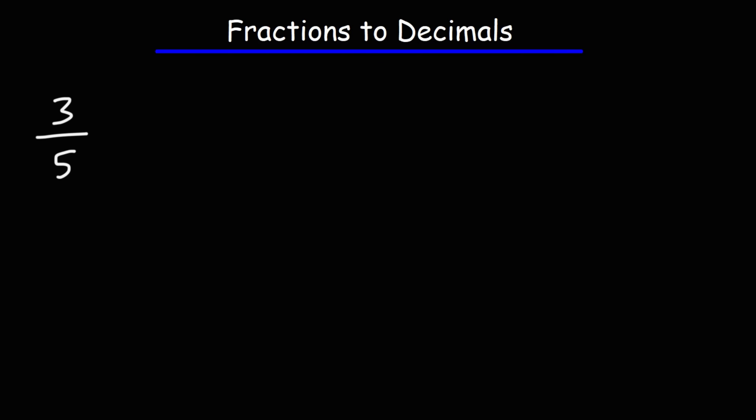In this video, we're going to talk about how to convert fractions to decimals. Let's start with this example: we have 3 over 5. How do we convert this into a decimal value? We need to do division — we need to divide 3 by 5.